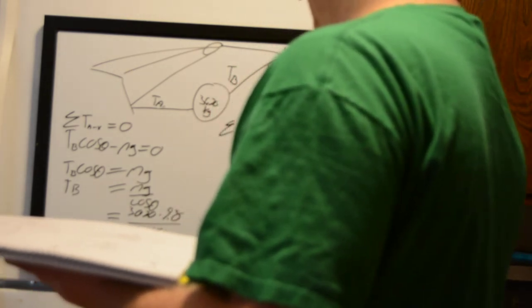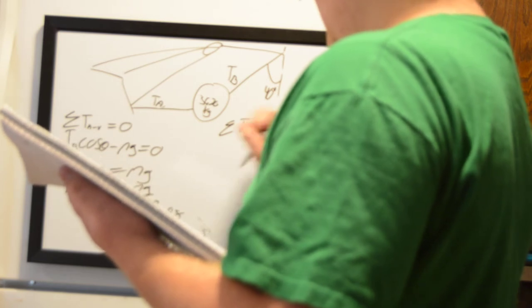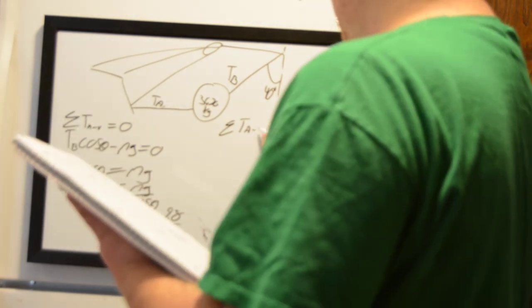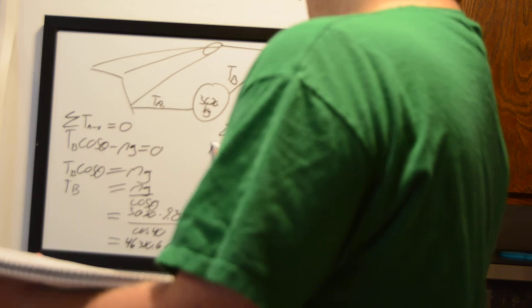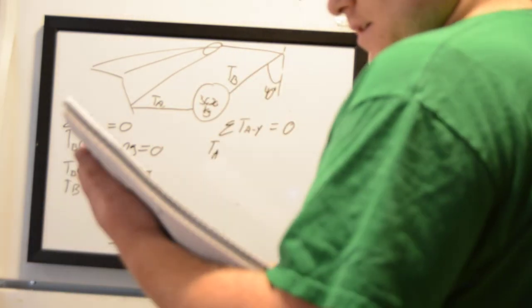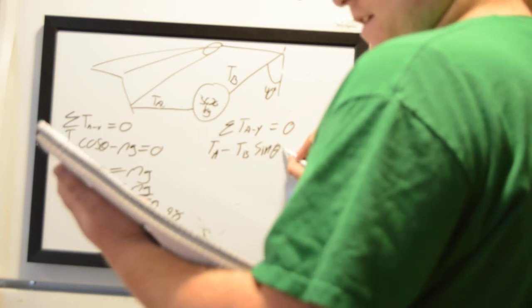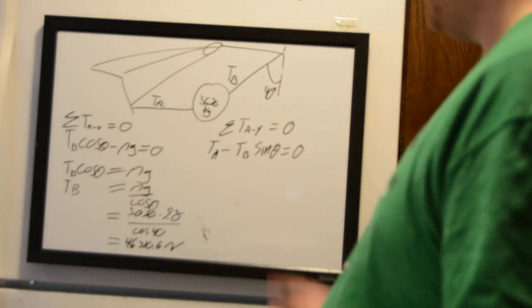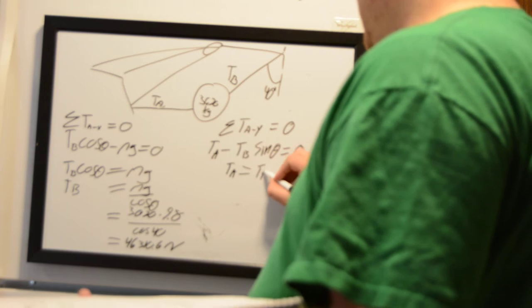For Part B, we find Tension A. Again using Newton's third law, the sum of tensions in the y-direction equals zero. So we have Tension A minus Tension B times the sine of theta equals zero — we use sine of theta because this is in the y or upward direction.